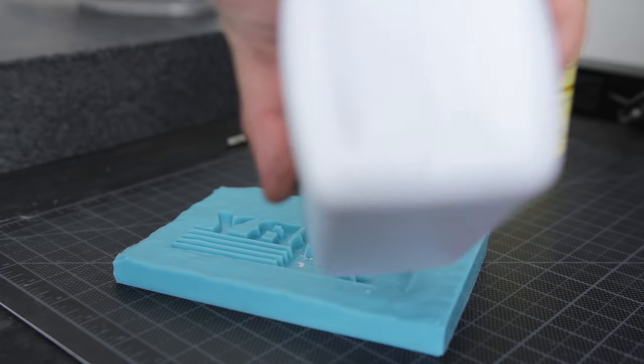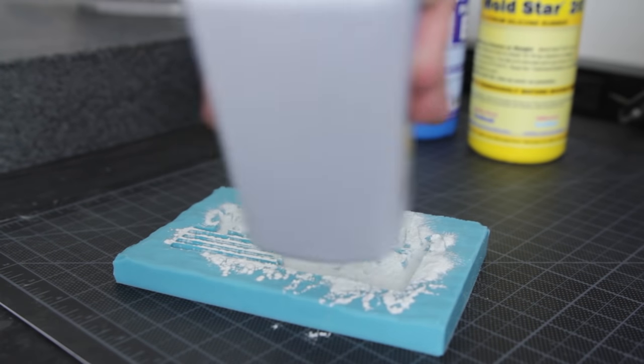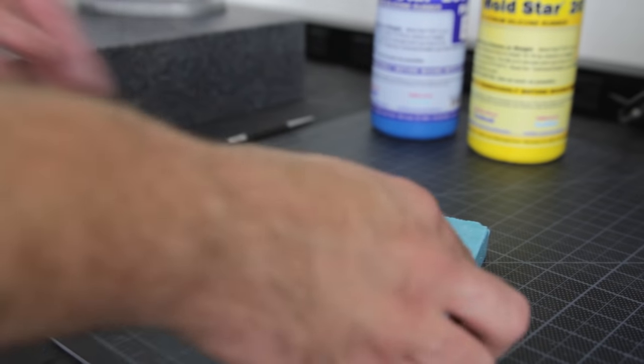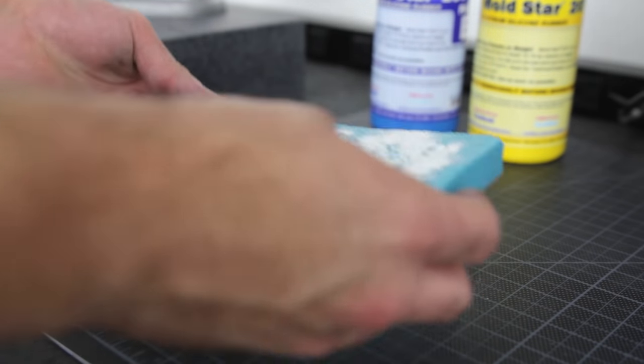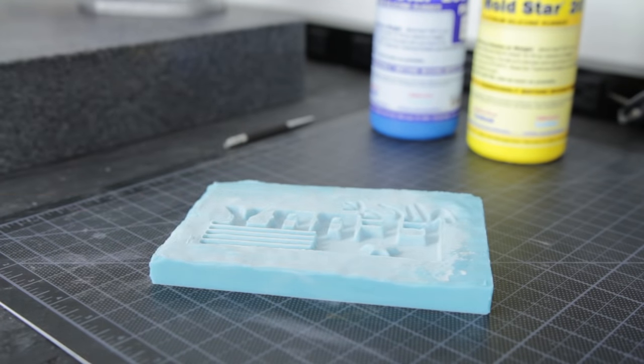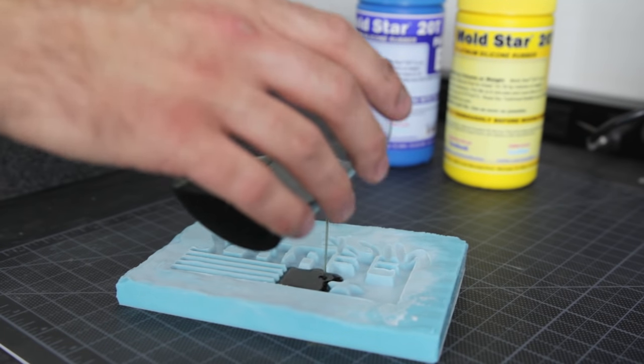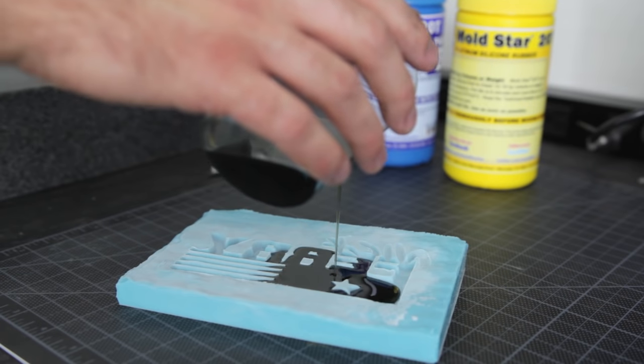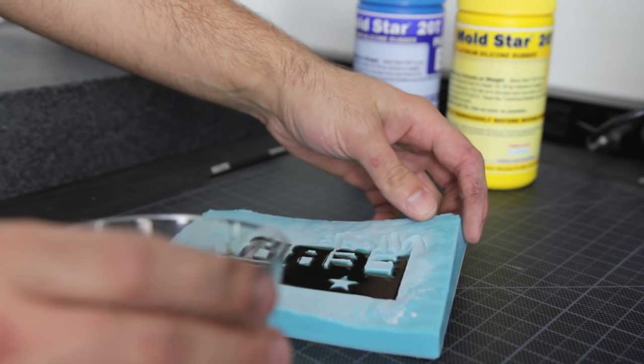I grab some talcum powder and apply it to my mold. This causes the resin to absorb finer details and reduces bubbles in the resin, especially on corners. I then pour some resin into the mold and move the resin around slowly.